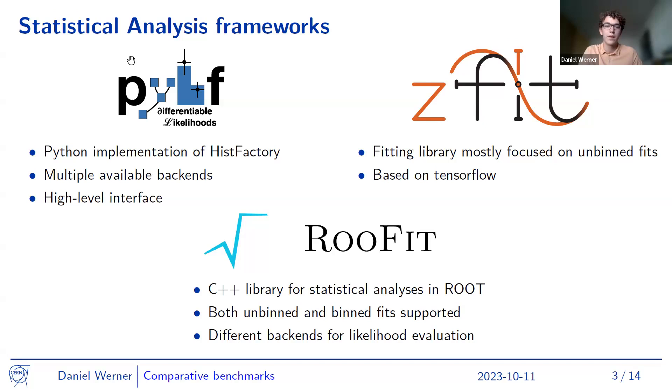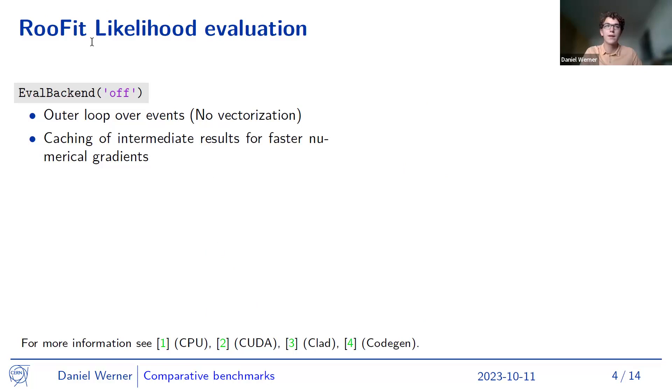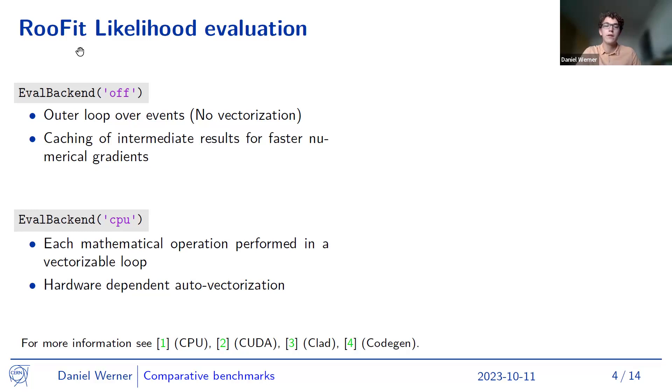The default evaluation method of likelihoods in RooFit is that we just have an outer loop over all the events and we evaluate a computation graph for our likelihood each time. And to somewhat improve the performance, RooFit used to cache intermediate results so that when some parameters are varied, not all nodes of the computation graph need to be re-evaluated. An upgrade to this was a CPU backend that introduced vectorization so that the computations of the graph can be vectorized over many events at once. And depending on which hardware is used, there's also auto vectorization by the compiler. Then a third backend is CUDA that allows RooFit to use the GPU. So CUDA kernels are launched to compute the likelihood and CPU can be used in parallel for some computations.